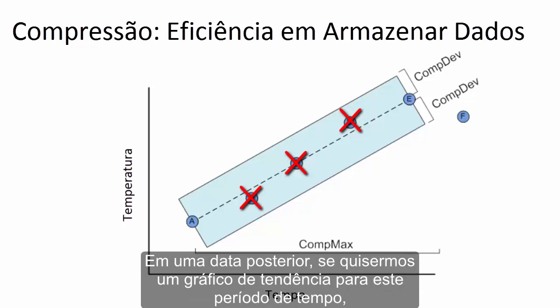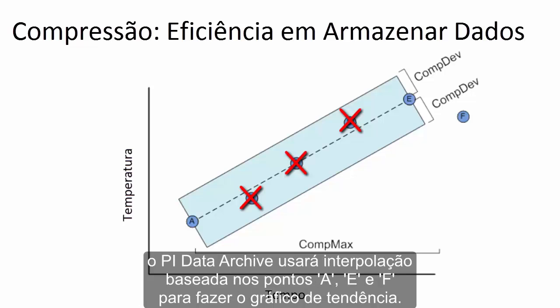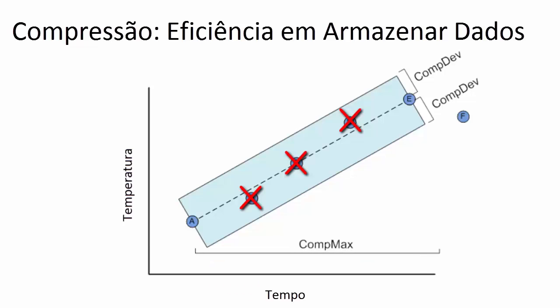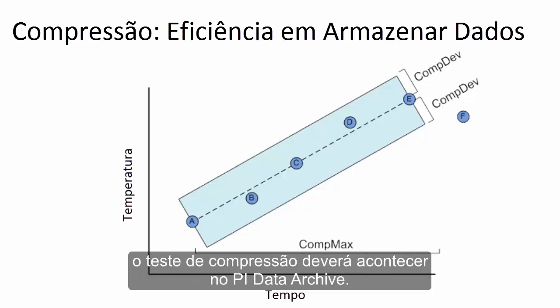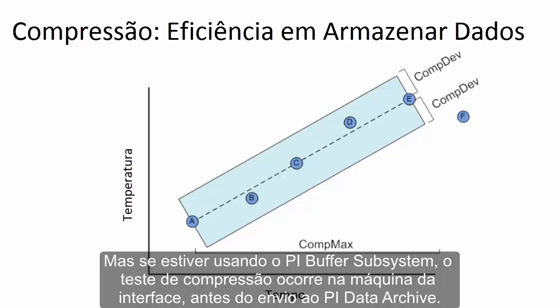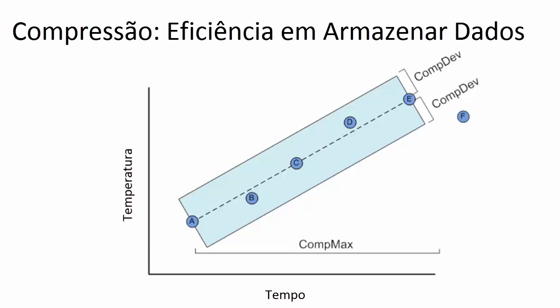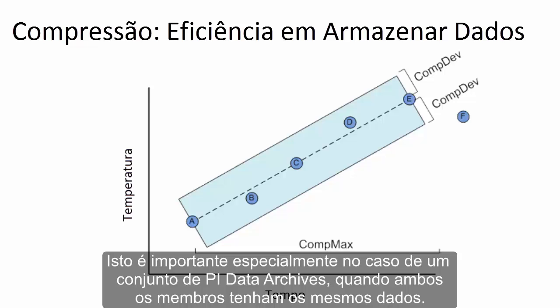At a later date, if we want a PI Trend for this time range, PI Data Archive is going to utilize interpolation based upon points A, E, and F to report the PI Trend. Unless you are using PI Buffer subsystem on the PI Interface node to buffer data, compression testing happens on the PI Data Archive. But if you are using PI Buffer subsystem, then compression testing is performed on the PI Interface node before it is sent to the PI Data Archive. This is especially important for PI Data Archive collectives so that both members of the collective have the same data.